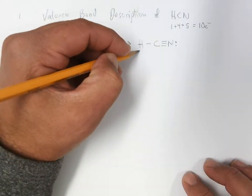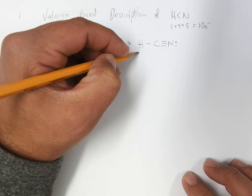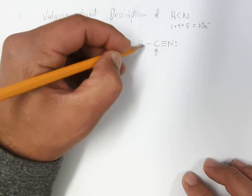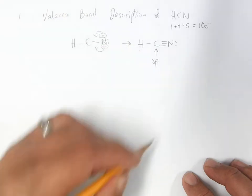So hydrogen does not hybridize. It's only going to use its 1s orbital. Carbon has nitrogen and a hydrogen on it, so we're going to call it sp-hybridized.